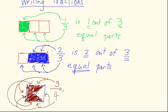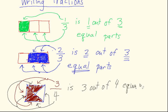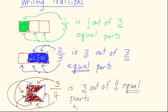So you can think of three over four, or three fourths — that's the same as saying three out of four equal parts have been colored in. Three out of four equal parts of this square have been colored in. Okay, I will stop right here. I hope you enjoyed this video.